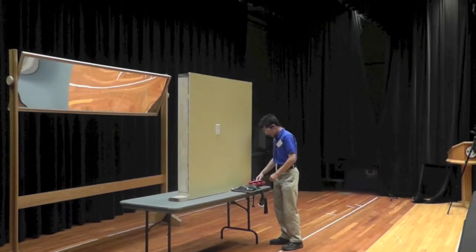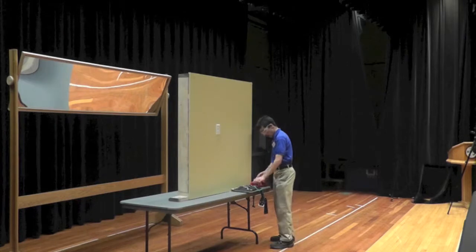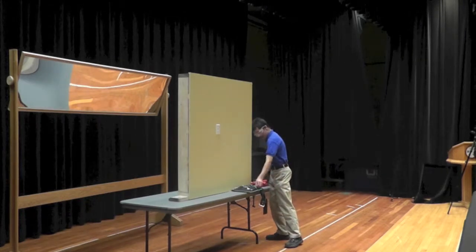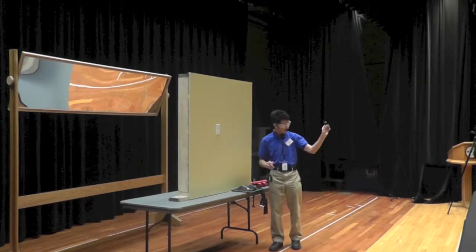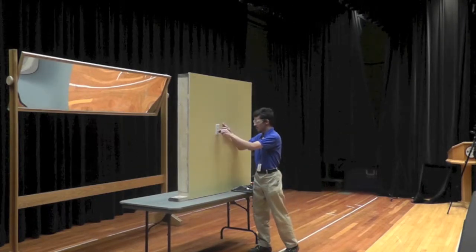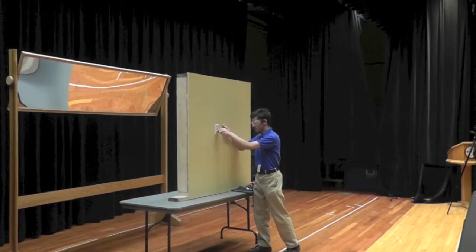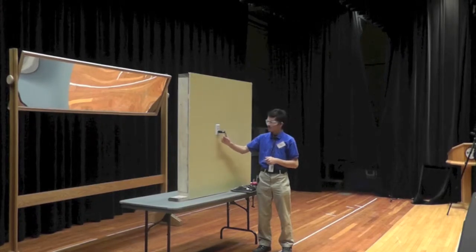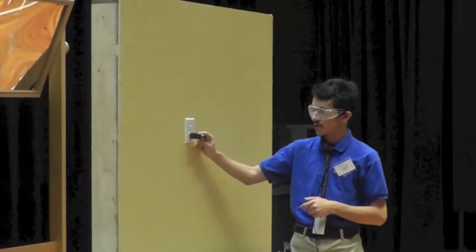To test this, we will use a plug-in tester manufactured by Greeley. We plug it into the receptacle, and as you can see, the three lights have not turned on. This means the receptacle is de-energized.